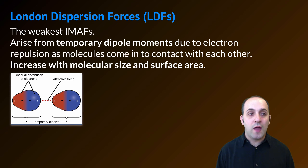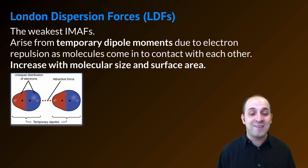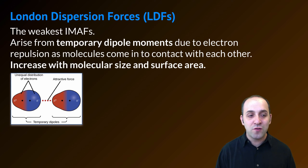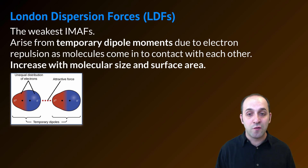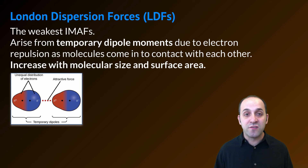London dispersion forces, or LDFs, are the weakest type of intermolecular attractive forces. They arise from temporary dipole moments. If you think about the electrons moving around a molecule, you could understand that there will be moments where there are more electrons in one region of the molecule and less in another. Because of that temporary unequal distribution of charge, you will get these temporary, very weak intermolecular attractive forces between the temporarily partially positive and temporarily partially negative regions of a molecule. Since larger molecules will have more of these temporary dipole regions, the strength of London dispersion forces increases with the size of the molecule and the surface area of the molecule.